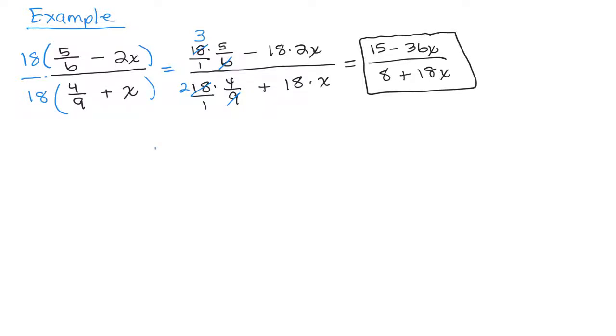So for instance, 15 minus 36x over 8 plus 18x, if you did factor the numerator, you could factor out a 3, which is 5 minus 12x.